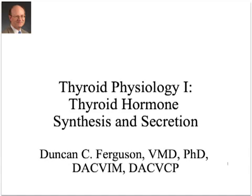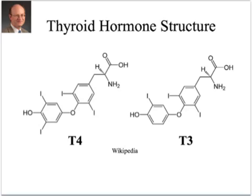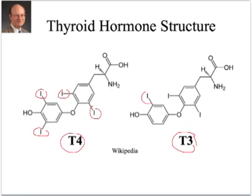Hi everybody, in this unit we're going to talk about the synthesis and secretion of thyroid hormones. It's important to recognize first a little bit about the structure of thyroid hormones. Here I've shown the structure of T4 and T3. Their names are derived from the number of iodines that they have — four for T4, three for T3.